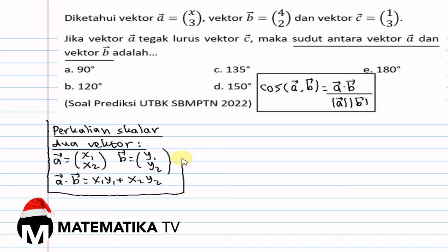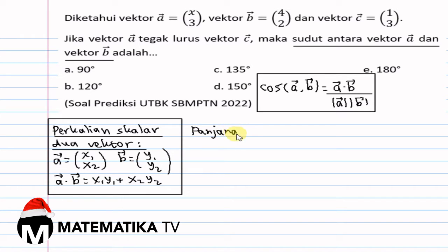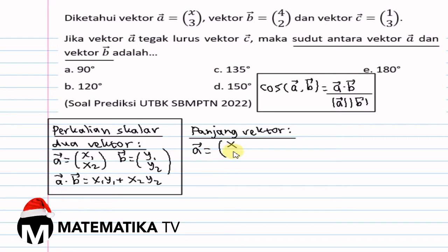Kemudian, rumus menghitung panjang Vektor A adalah: jika diketahui Vektor A sama dengan (X, Y), maka panjang Vektor A sama dengan akar X pangkat 2 plus Y pangkat 2.